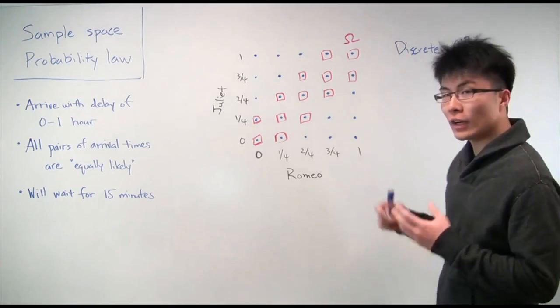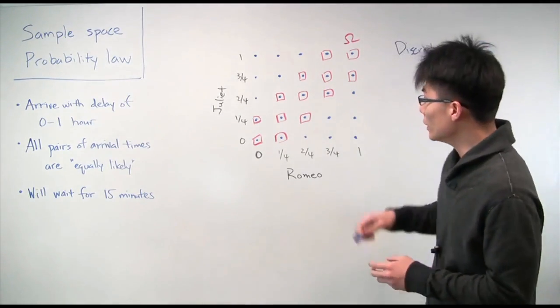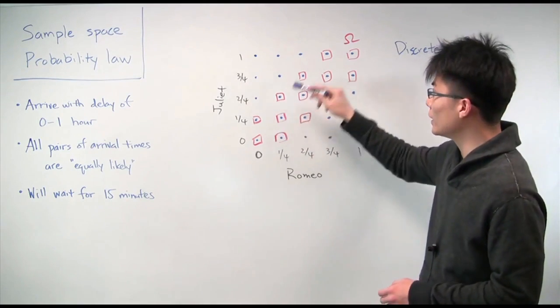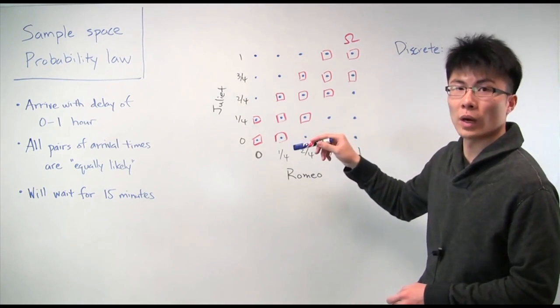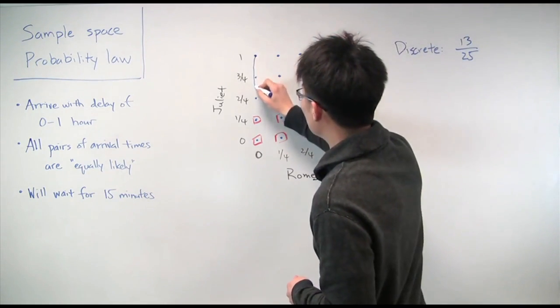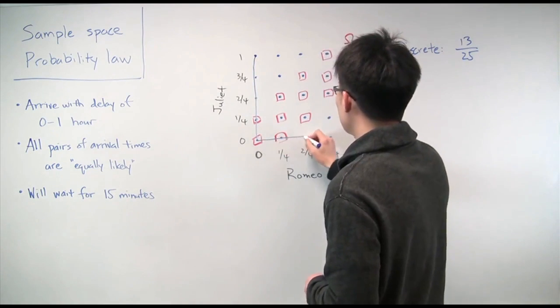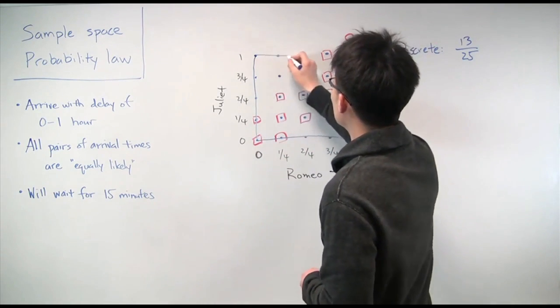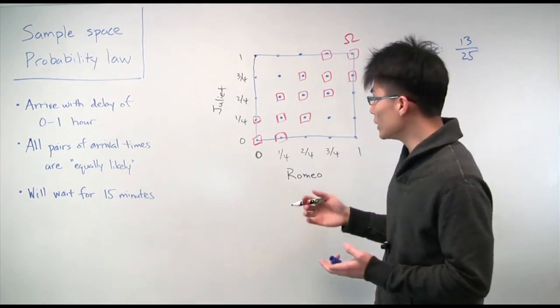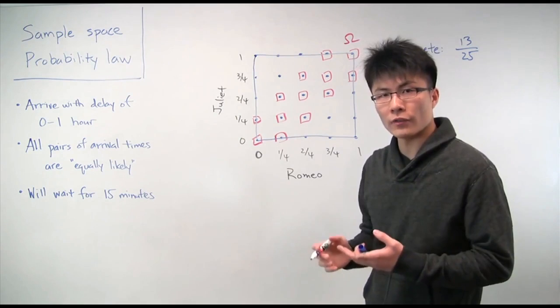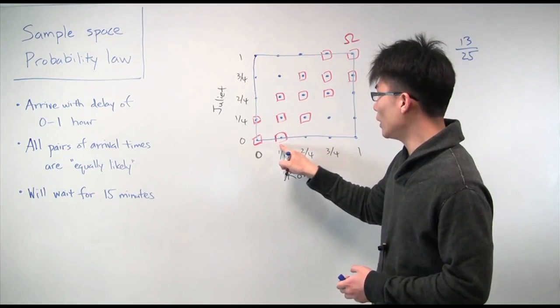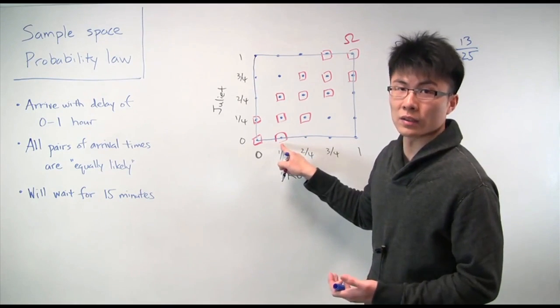So now we have an idea of how to solve this problem. It amounts to basically coming up with a sample space, a probability law, and then identifying the event of interest and calculating the probability of that event. So now let's actually solve the problem that we really are interested in, which is that instead of confining Romeo and Juliet to arrive within only 15 minute increments, really time is continuous and Romeo and Juliet can arrive at any time. So they don't necessarily have to arrive 15 minutes late. Romeo can arrive 15 minutes and 37 seconds late if you wanted to.